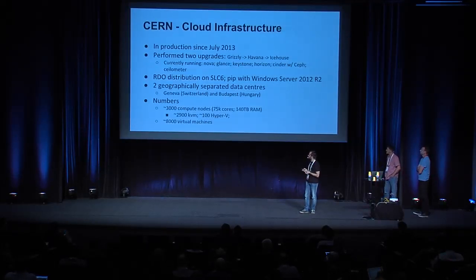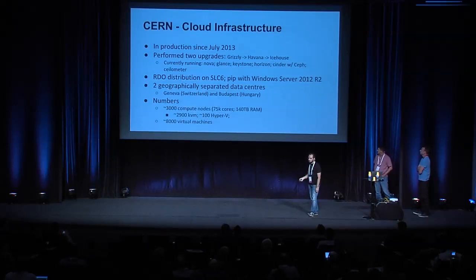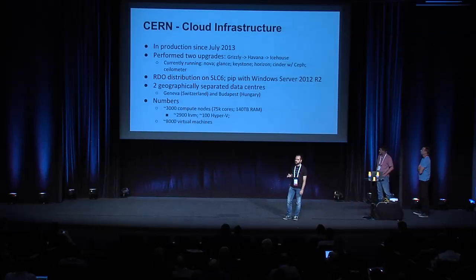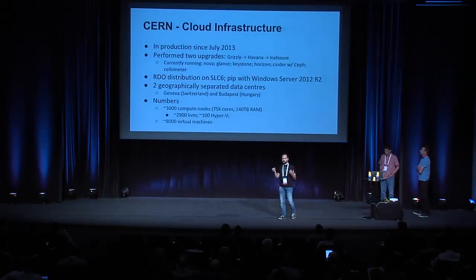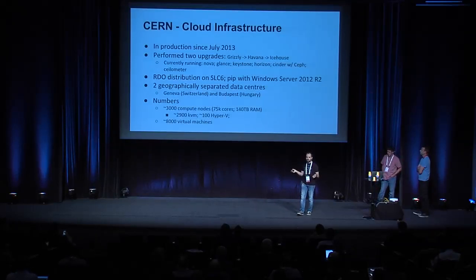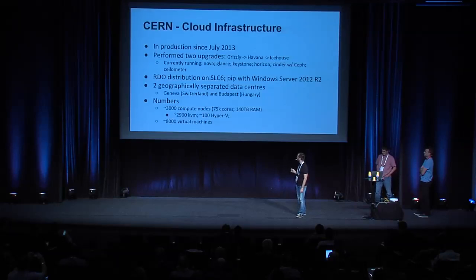The infrastructure runs in two separate geographical data centers: one in Geneva, where we have around 94,000 cores and more than 200 petabytes of data storage, and a more recent one in Budapest, Hungary, where we have 21,000 cores. Since we have this cloud infrastructure, we've been migrating all applications and services at CERN to run on top of the cloud, converting servers to compute nodes on OpenStack. At the moment in our cloud infrastructure we have 75,000 cores available and are running around 8,000 virtual machines.